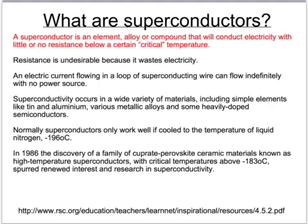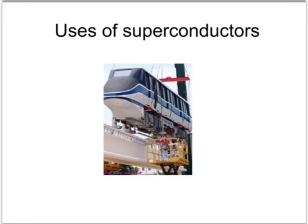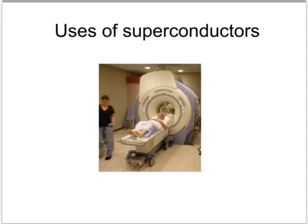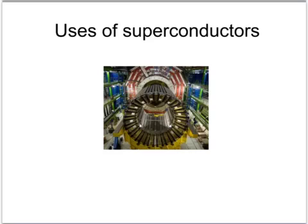When superconductors are at very low temperatures, they are incredibly good conductors and offer very little resistance. They are used in powerful electromagnets — for example, in maglev (magnetic levitation) trains, which use very powerful magnets to lift the train off the track, giving it a very easy, nearly frictionless ride. MRI machines for body scans also use incredibly powerful electromagnets that must be cooled to very low temperatures, which is one reason why these machines are so expensive. The Large Hadron Collider also uses these electromagnets to accelerate particles to incredible speeds.